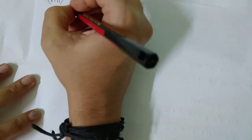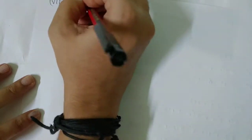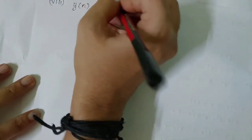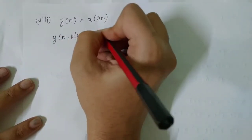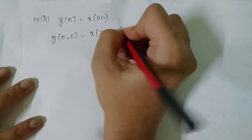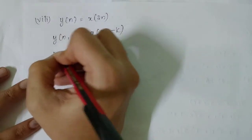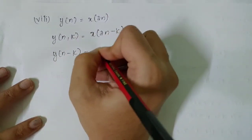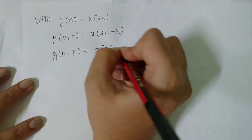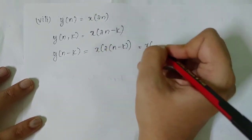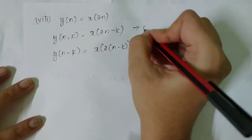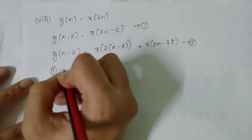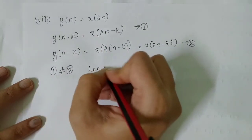y[n] = x[2n]. So y[n,k] = x[2n−k], that is the first equation. And y[n−k] = x[2(n−k)] = x[2n−2k], that is the second equation. Since one is not equal to two, hence the system is time variant.